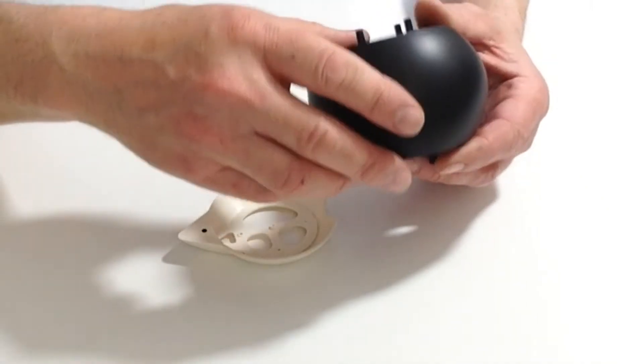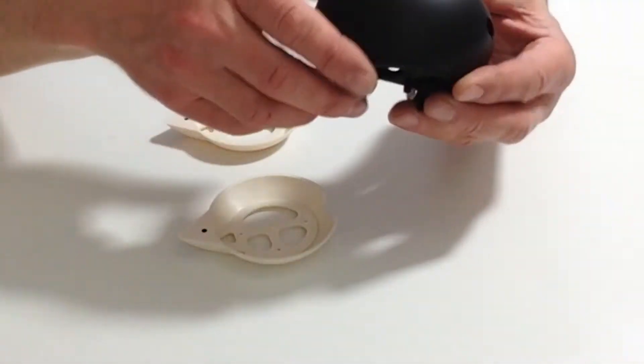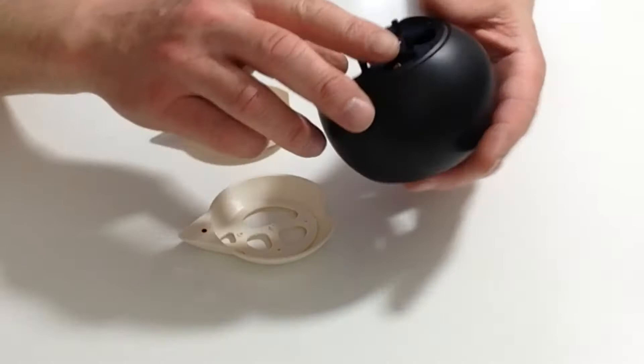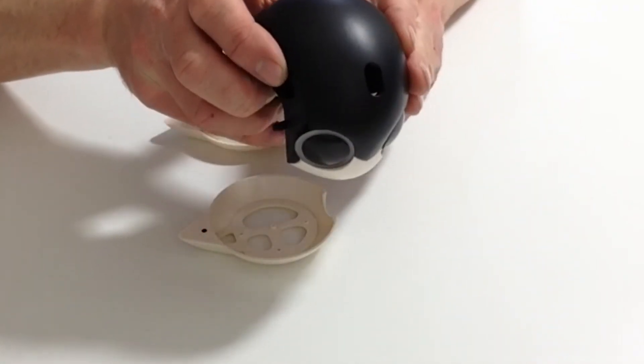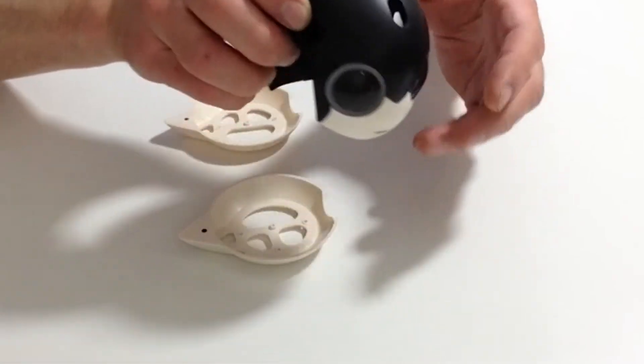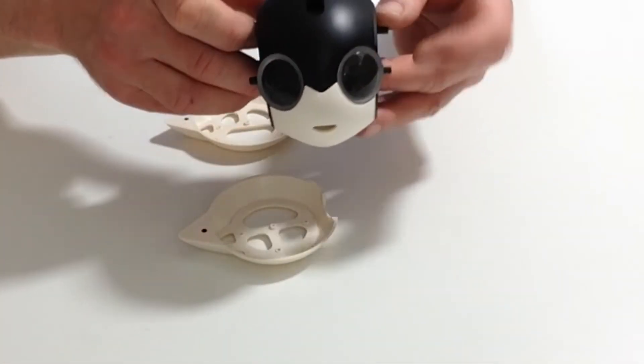Now we're going to attach Robbie's ears. Taking Robbie's head and looking at the left hand side from the back, you've got the left hand side here - from your front it's going to be this side.